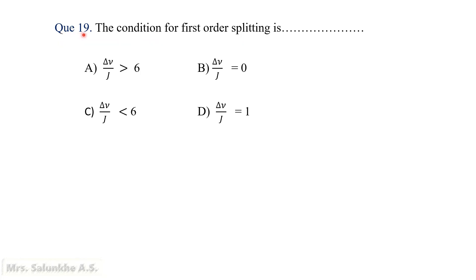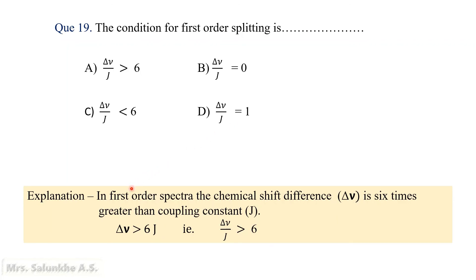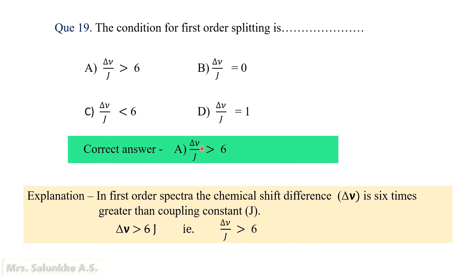Question 19: The condition for first order splitting is — Δν/J > 6, Δν/J = 0, Δν/J < 6, or Δν/J = 1? In case of first order splitting, the chemical shift difference Δν is greater than 6 times the coupling constant J. That is, Δν/J > 6. Thus, the correct answer is Δν/J > 6. Such spectra are known as first order spectra.